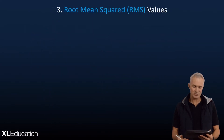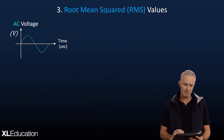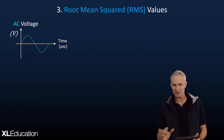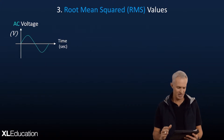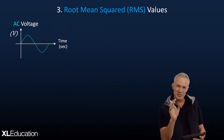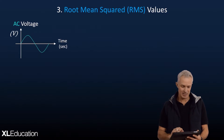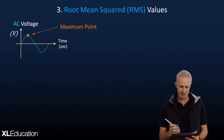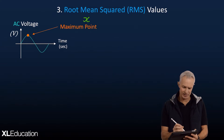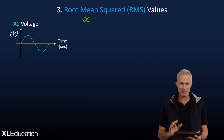That leads us to RMS — root mean square, or root mean squared values. Here's our little AC voltage that looks like a sine curve, with a maximum point we can read — let's call it x. If we took the average it's going to be zero; if we took the maximum it's too much, so we need something in between. The first step is to square it. If we turn sine into sine squared, the effect is it makes everything positive — because plus x times plus x gives x squared, and minus x times minus x also gives x squared. So squaring brings all the values into the positive space.